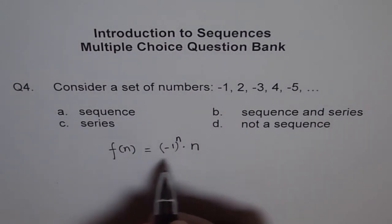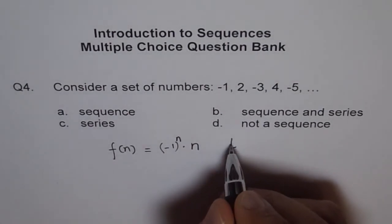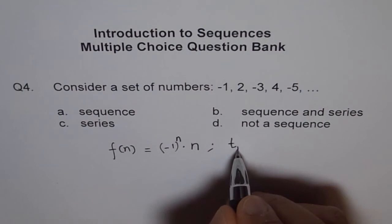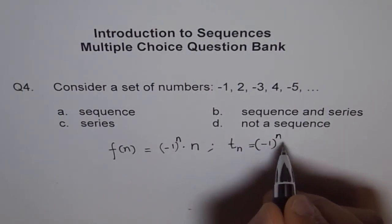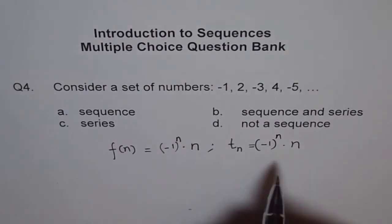So you can now use this. This is like your function, or you can write a general term for this also. And in terms of general term, we will write this as (-1)^n times n.